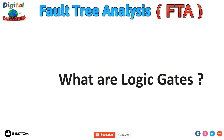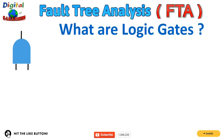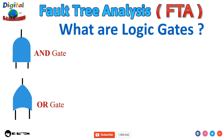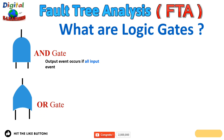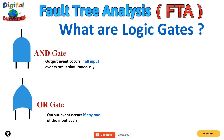What are logic gates? There are normally two types of logic gates widely used when creating an FTA: the AND gate and the OR gate. The AND gate says the output event occurs only if all the input events occur. The OR gate says the output event occurs if any one of the input events occurs.